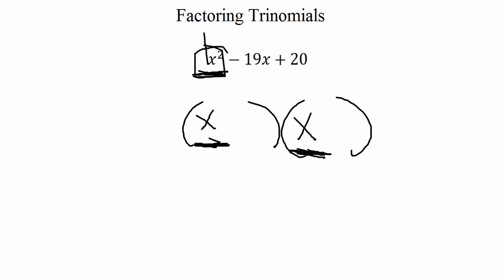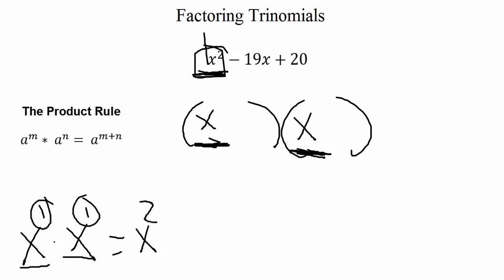And do remember, that does come from the product rule. Remember, x times x, the product rule says that when we multiply like bases, we scooch on over our x and we add those exponents. 1 plus 1 gives us 2. So therefore, x times x is x squared.